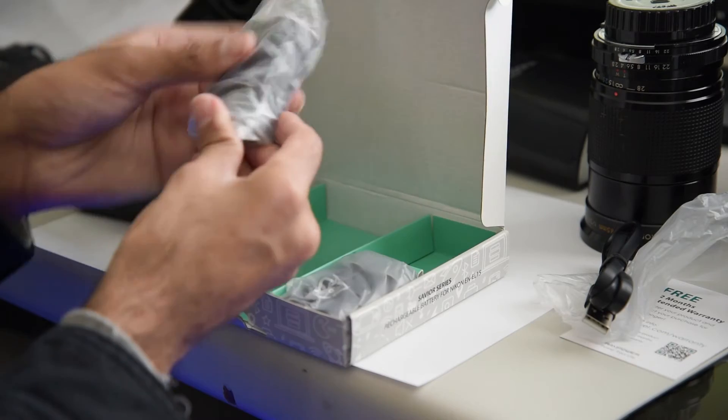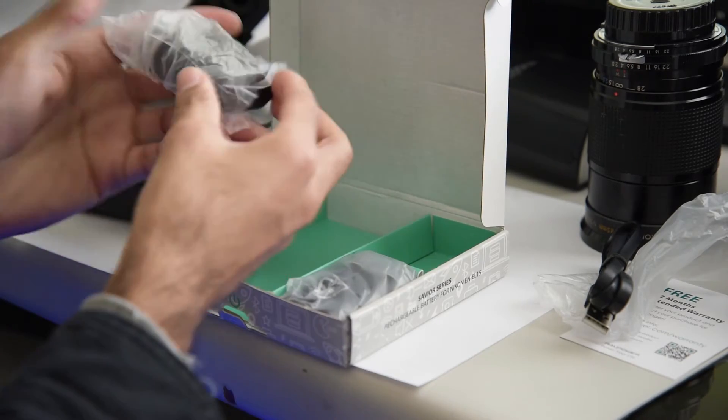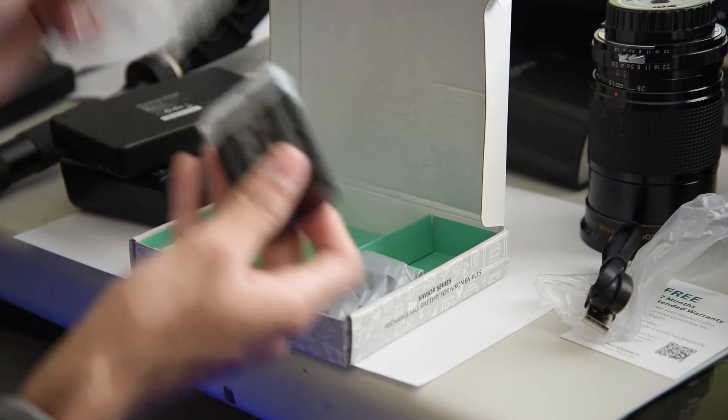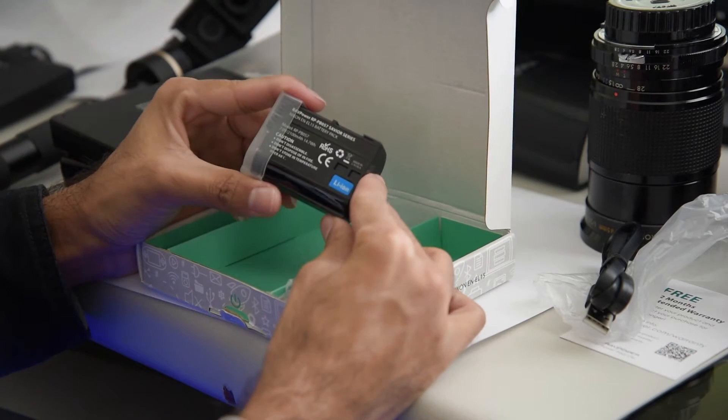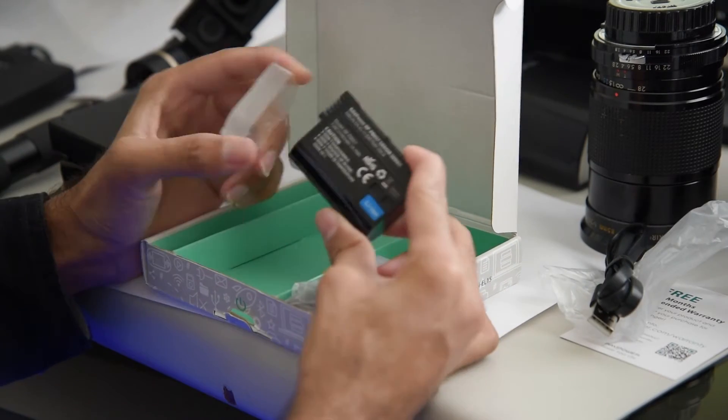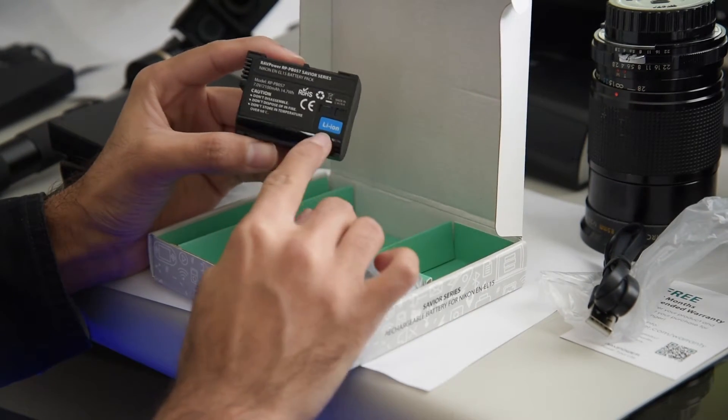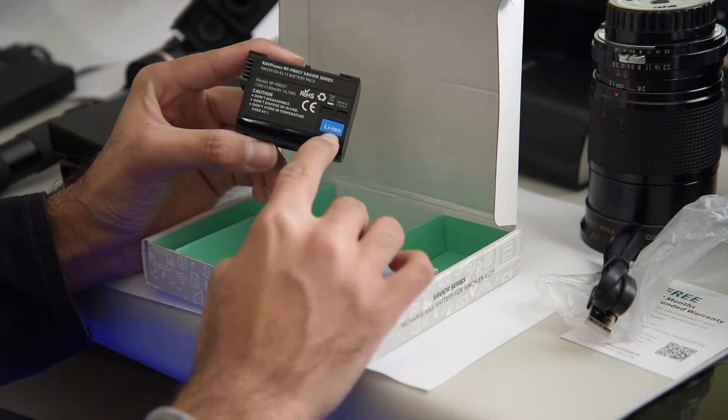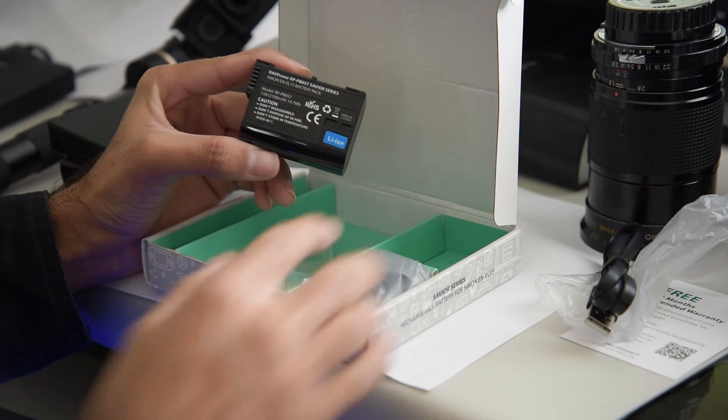So it comes with two batteries which is really nice for 40 bucks. So you get this. It's a little bit different than your standard Nikon battery. The main thing being that your standard battery will have the little Nikon holographic sticker on it.